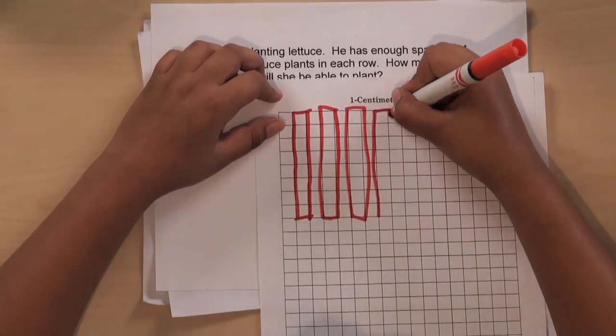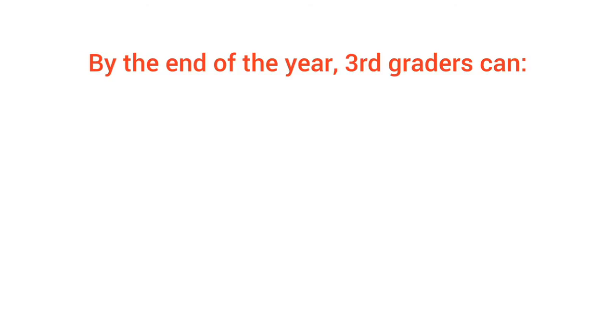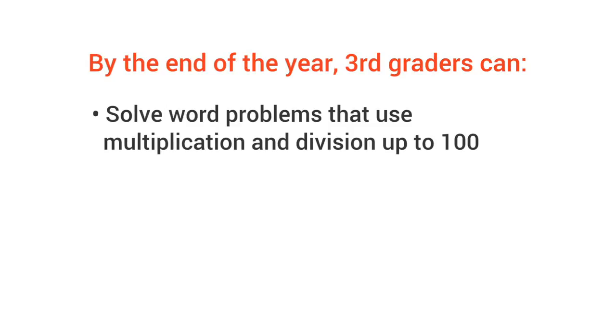So how do you know if your third grader is on track? Well, by the end of the year, third graders can solve word problems that use multiplication and division up to 100.